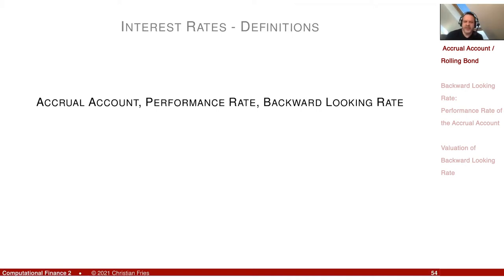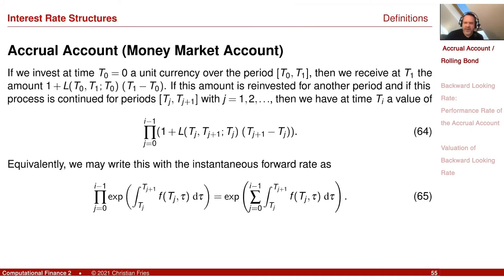We started here with zero-coupon bonds, then defined the forward bond as a special financial product — how much money do you have to pay at a future point in time — and from that we derived the forward rate. And if you remember back on my first slide, I had this reinvestment strategy. So now I can write my reinvestment strategy again in the interest rate L, and I can define the accrual account or money market account.